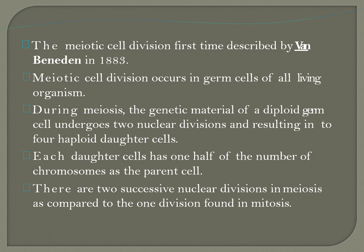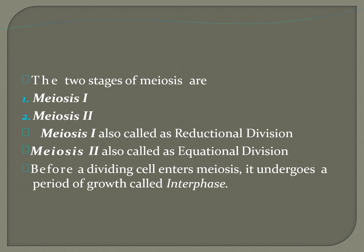There are two successive nuclear divisions in meiosis, as compared to the single division found in mitosis. Meiosis is divided into two stages: meiosis first and meiosis second. Meiosis first is also called reductional division because the germ cells, which have 2n chromosomes, divide to produce two cells having half the number of chromosomes — the haploid or n number. The number of chromosomes from the parent cell are reduced to half.